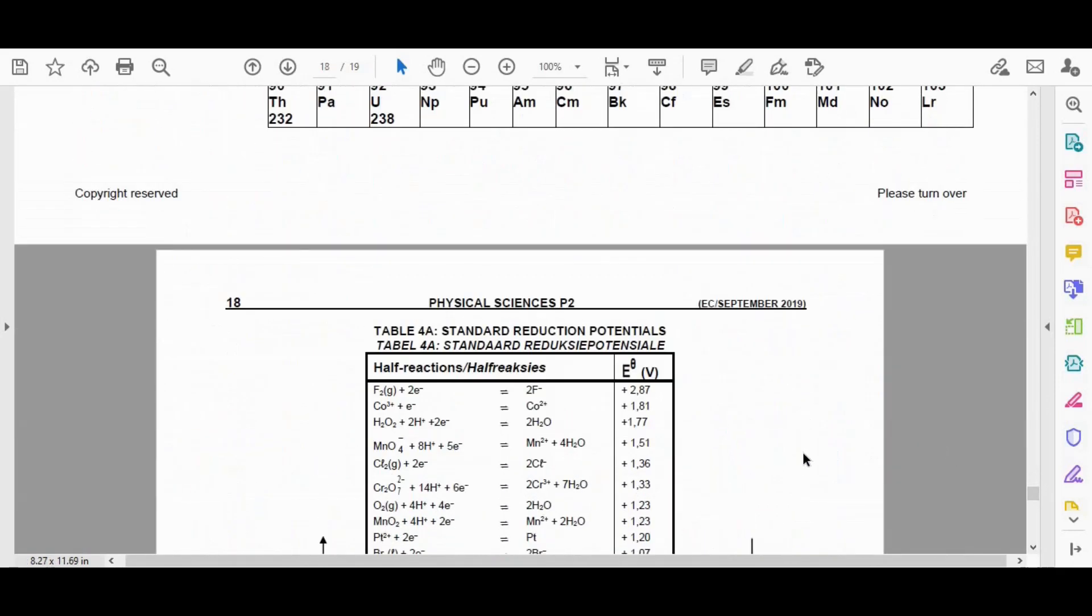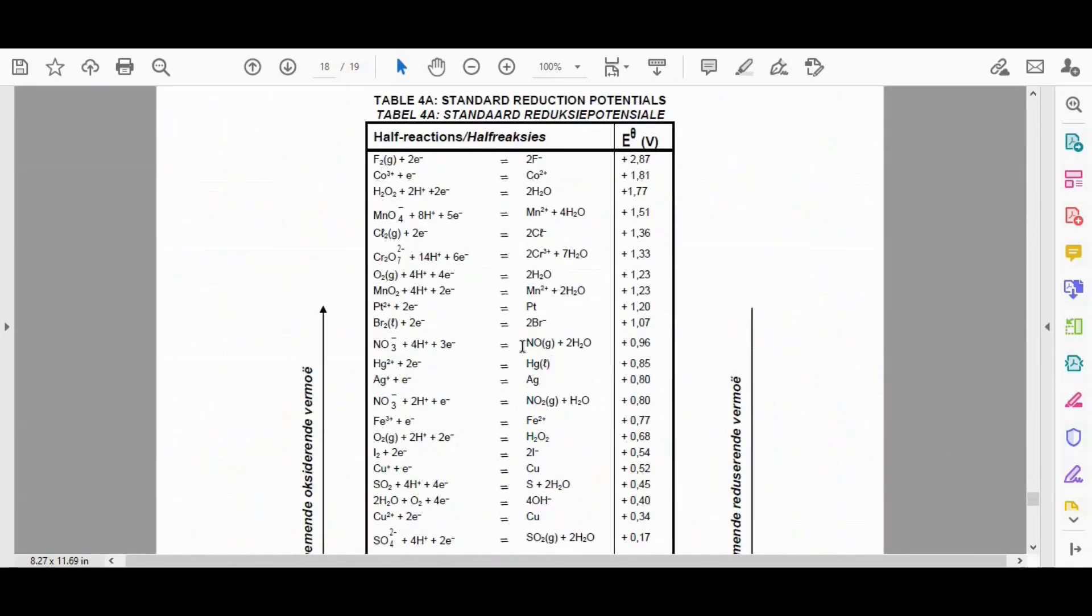So we just go to our table, and we find, here we go, we got Br2 here, plus 2E gives us 2Br minus. Okay, and that also confirms that that is also the cathode, because it's a positive 1.07.